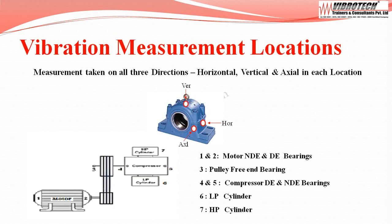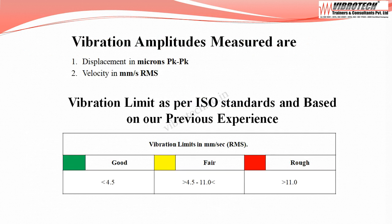Vibration measurements are taken in all three directions: horizontal, vertical, and axial, at each location. Measurement locations are: motor non-drive end and drive end bearings, pulley free end bearing, compressor drive end and non-drive end bearings, low pressure cylinder, and high pressure cylinder. Vibration amplitudes collected are displacement in microns peak to peak, and velocity in millimeters per second rms.